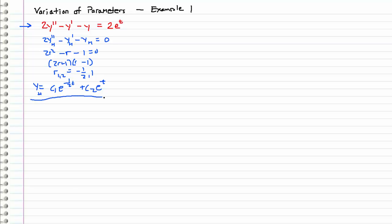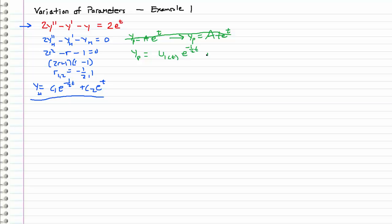Now that we have our homogeneous solution, if we were using the method of undetermined coefficients, the next step would be to assume a particular solution form of A times e to the t. We would notice that this term is included in the homogeneous solution, so we would have to modify it by multiplying through by t. But since we are using variation of parameters, we don't have to worry about this. What we do is take the homogeneous solution, drop the coefficients, and replace them with functions. So we assume a particular solution of the form u1(t) times e to the negative one-half t plus u2(t) times e to the t.